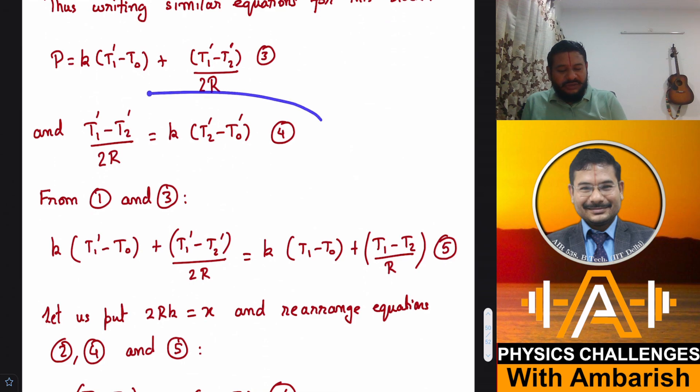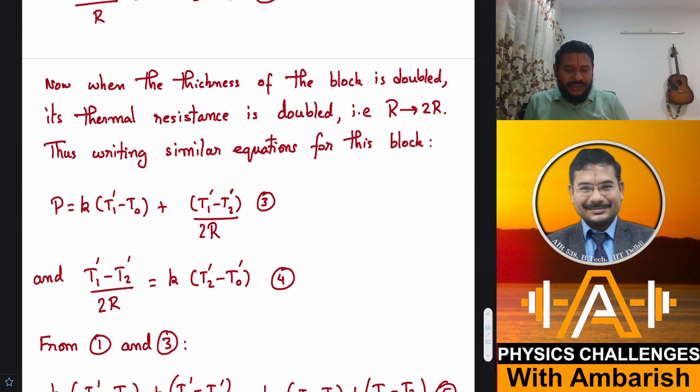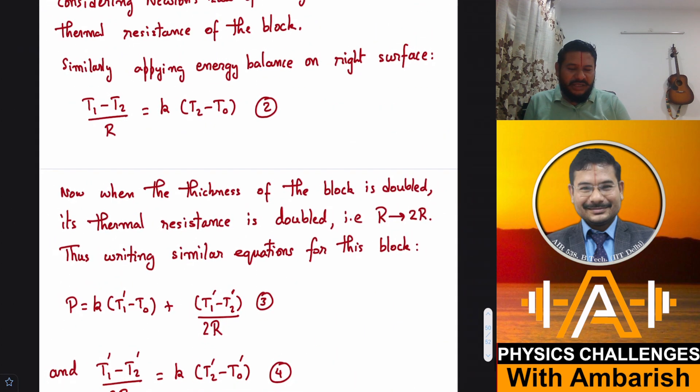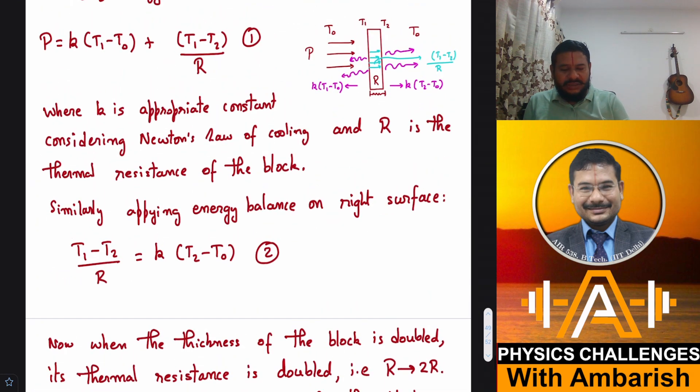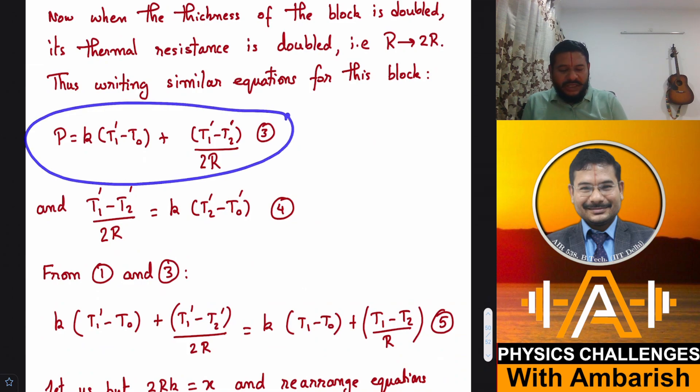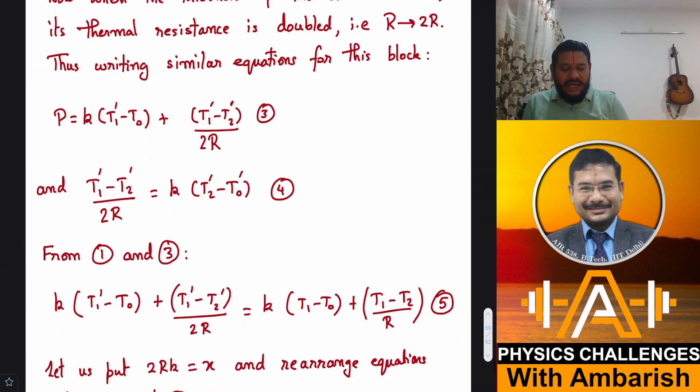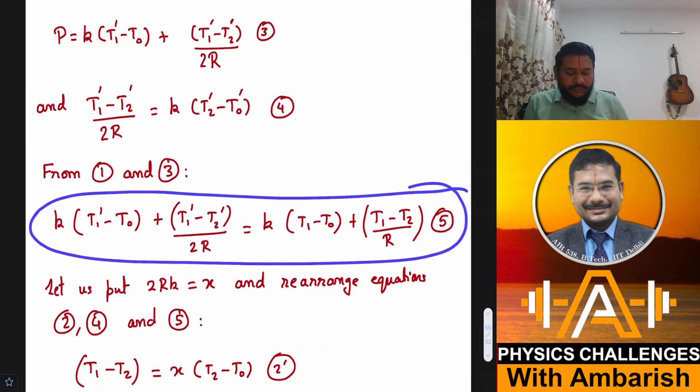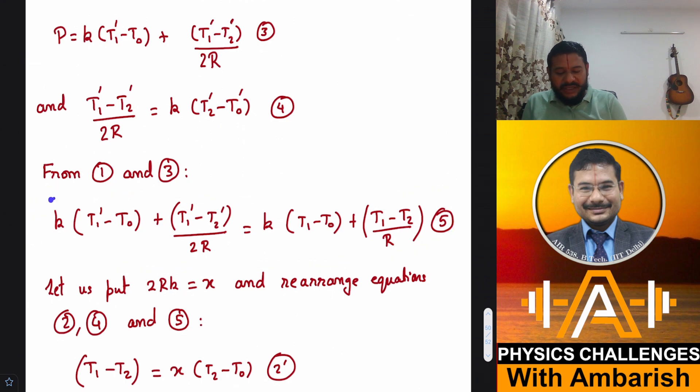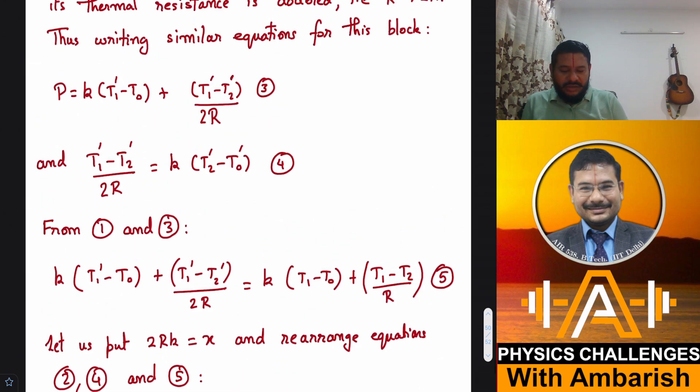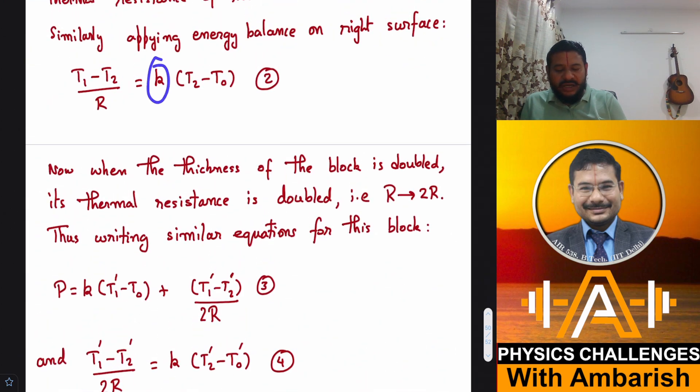P will be equal to K times T1 prime minus T naught. So this is the heat loss from the left side. This term will become T1 prime minus T2 prime divided by 2R. So that gives me third equation. Similarly, instead of this R, it will become 2R and this will become T1 prime, T2 prime, T2 prime and T naught. So this is the modification for equation 2, and that gives me equation 4.